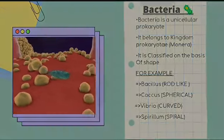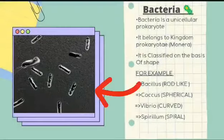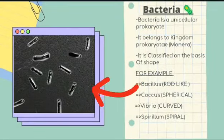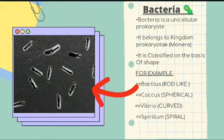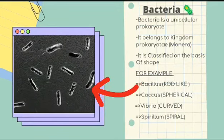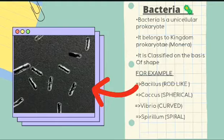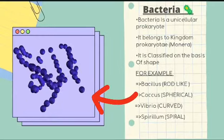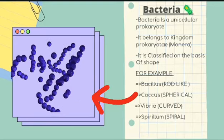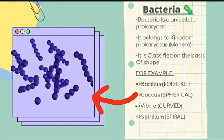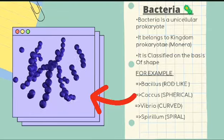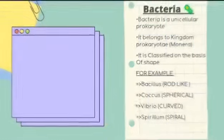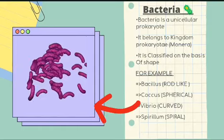The first shape is bacillus, which is a rod-like shape. As you can see here in this picture, bacillus has a rod-like structure. The coccus is also classified on the basis of shape — as you can see, the coccus is spherical in shape, or you can say it is oval in shape.